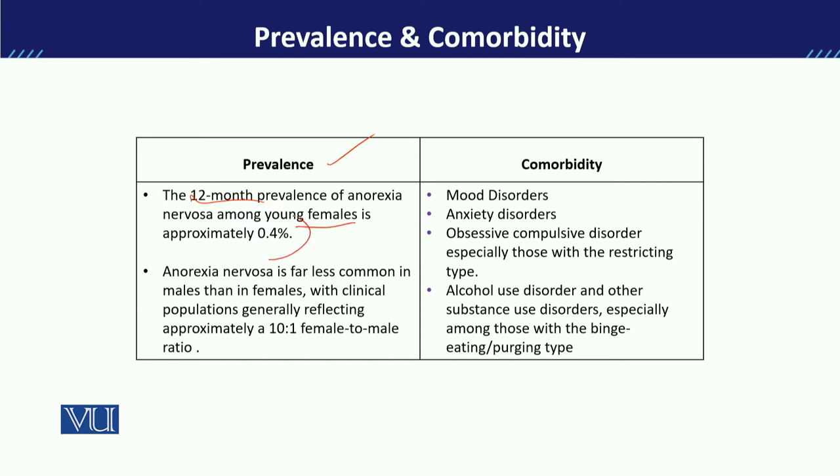If we look gender-wise, the prevalence of Anorexia Nervosa in males is very low. The female to male ratio in Anorexia Nervosa is approximately 10 to 1 — meaning for every 10 females, there is one male with the disorder.